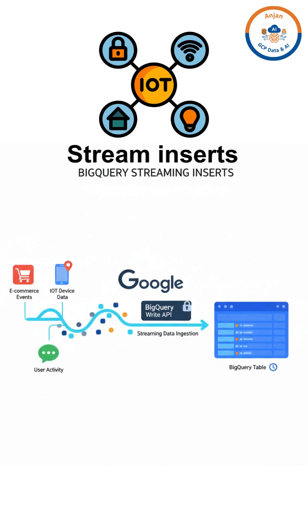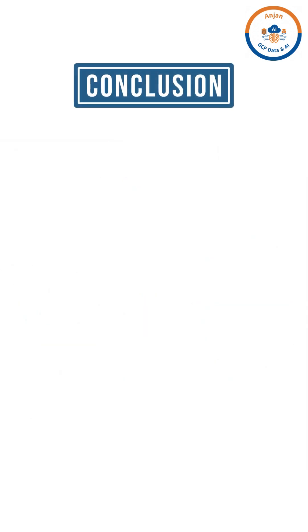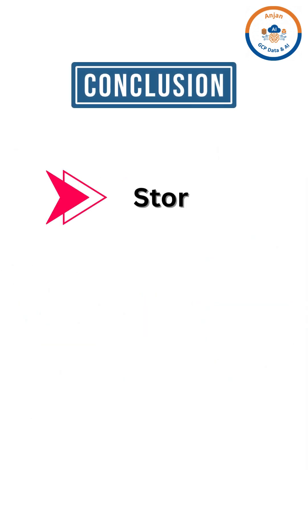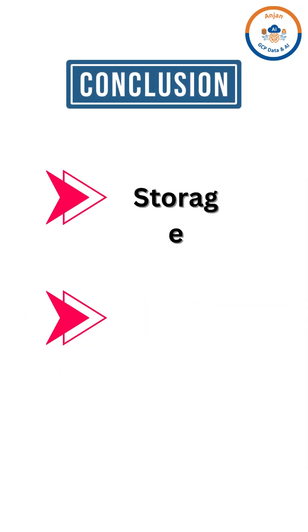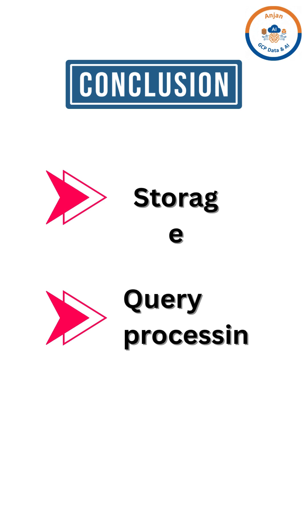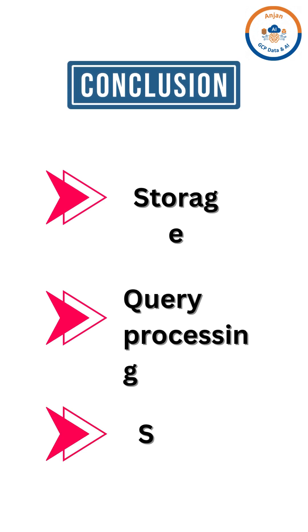Optimize your streaming by batching rows efficiently to reduce API calls. So remember: manage your storage by leveraging the 90-day discount, control your query costs by avoiding SELECT * and using performance tuning techniques. Master these three categories and you will master your BigQuery spending.